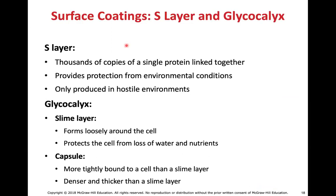Surface coatings include the S layer — thousands of copies of a single protein linked together that help provide protection from environmental conditions. They are typically only produced during hostile environments.